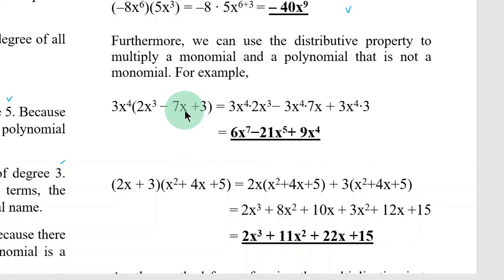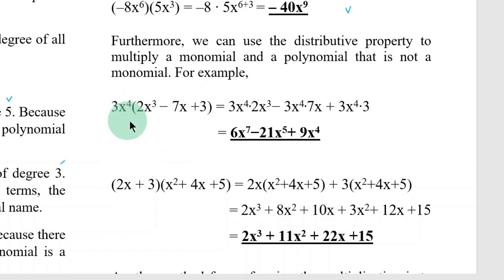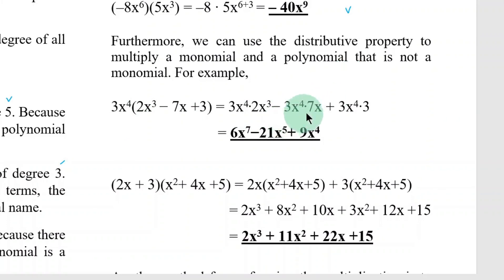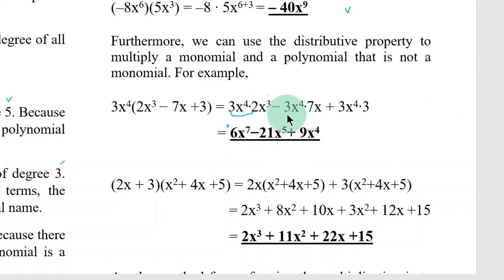Furthermore, we can use the distributive property to multiply a monomial and a polynomial that is not a monomial. For example, 3x to the fourth multiplied by a trinomial — applying laws of exponents: 3x to the fourth times 2x cubed, then distribute to negative 3x to the fourth times 7x, plus 3x to the fourth times 3. Simplifying: 3 times 2 is 6, exponents add 4 plus 3 equals 7. Then 3 times 7 is 21, 4 plus 1 is 5. Plus 9x to the fourth.